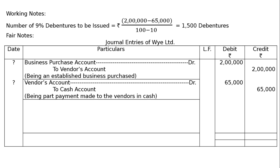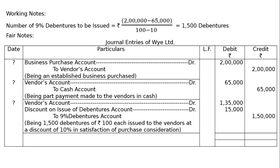The next entry is the rest of the payment by debentures. That is 2 lakhs minus 65,000, which is 1 lakh 35,000. Vendor's Account debited 1 lakh 35,000, Discount on Issue of Debentures Account debited 15,000, to 9% Debentures Account 1 lakh 50,000. We are issuing 1,500 debentures at Rs. 100 face value each, that is 1 lakh 50,000, and 1 lakh 50,000 minus 1 lakh 35,000 gives the discount of Rs. 15,000.